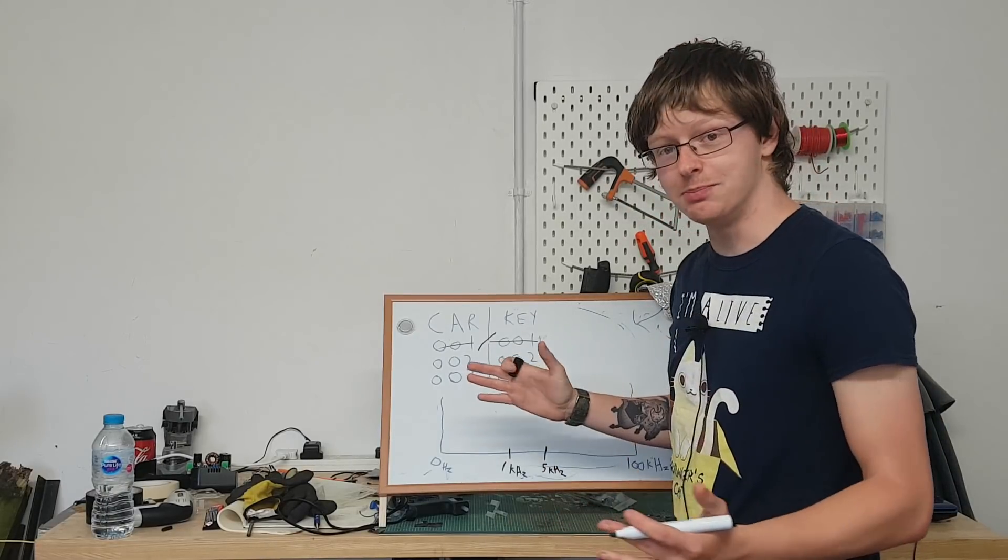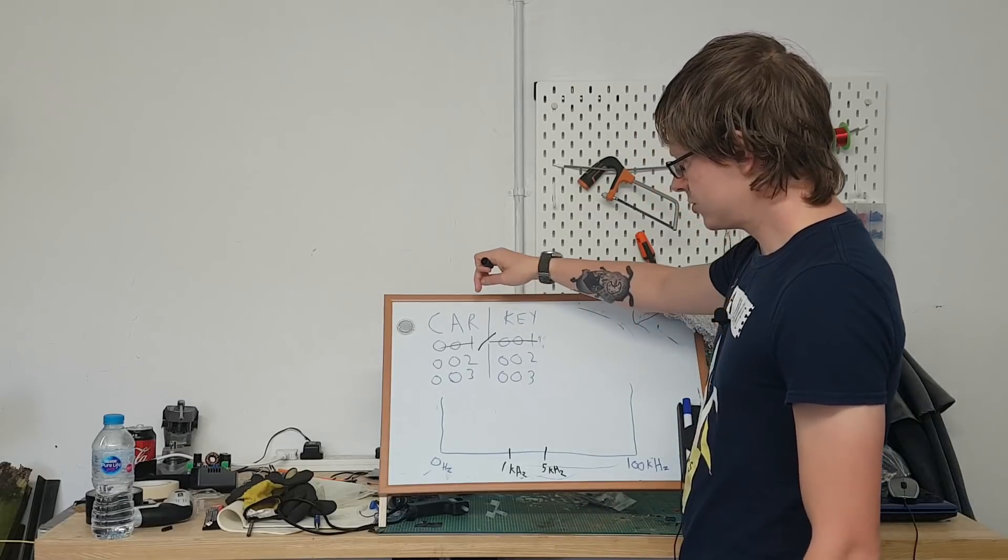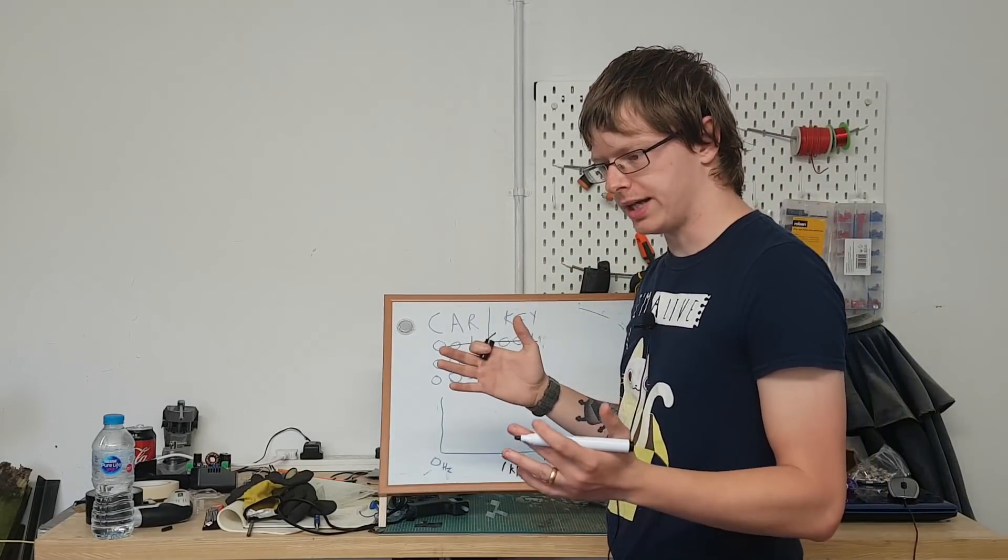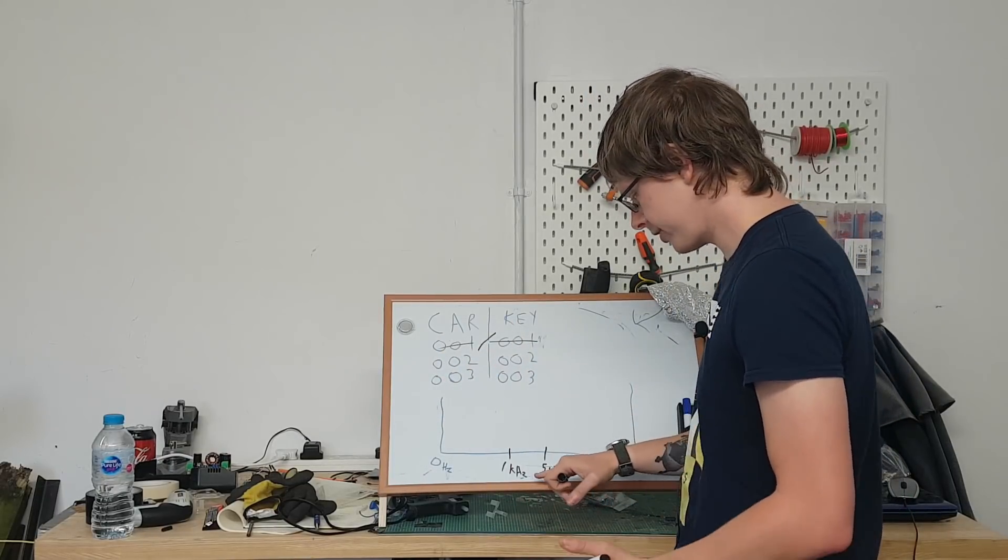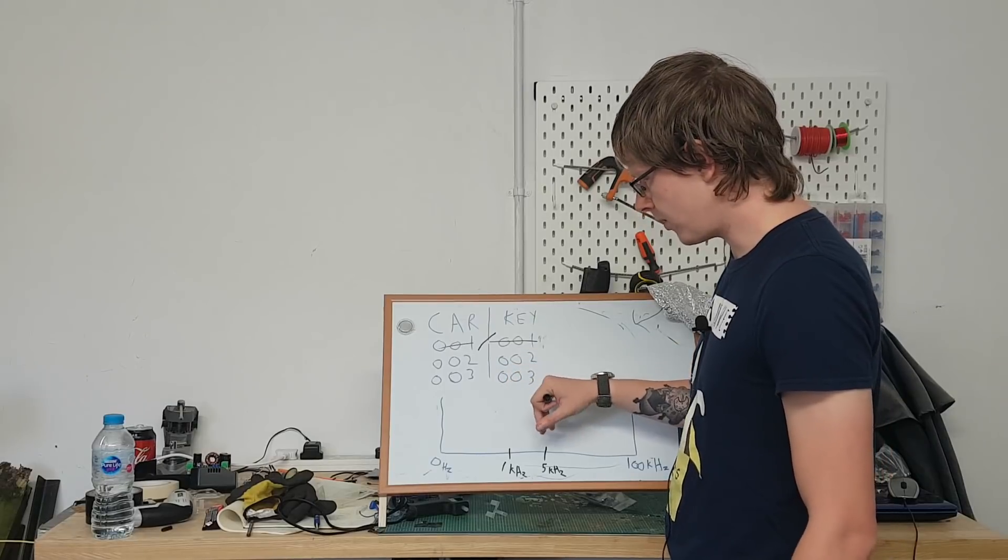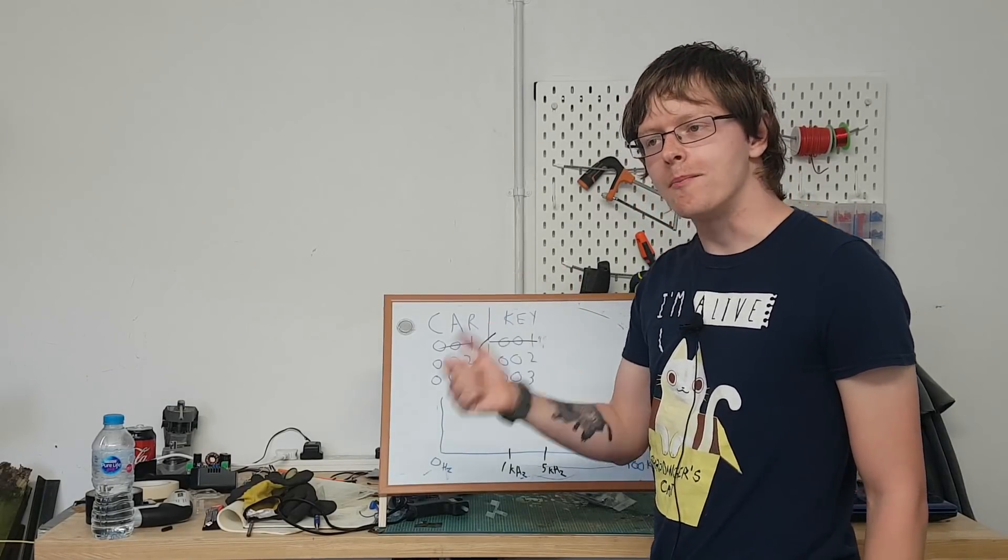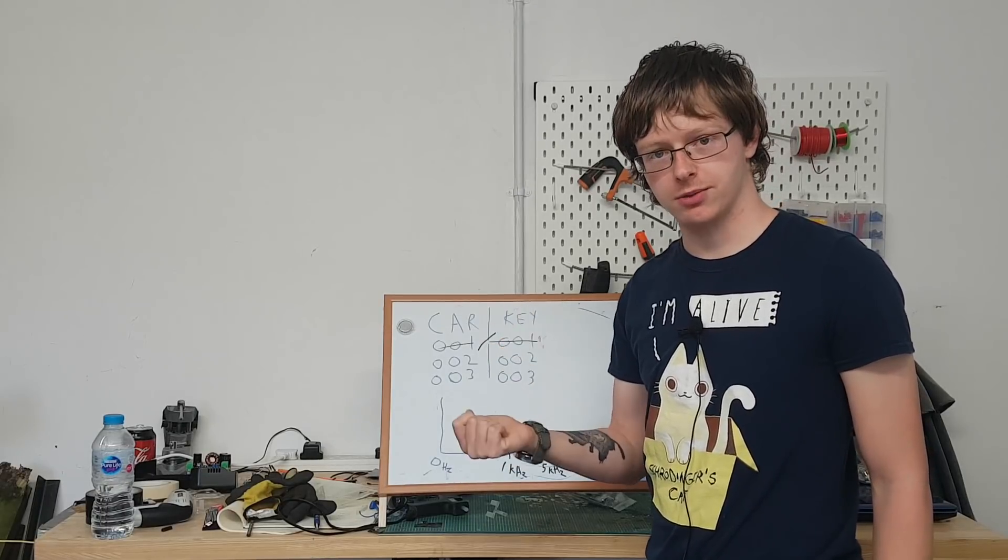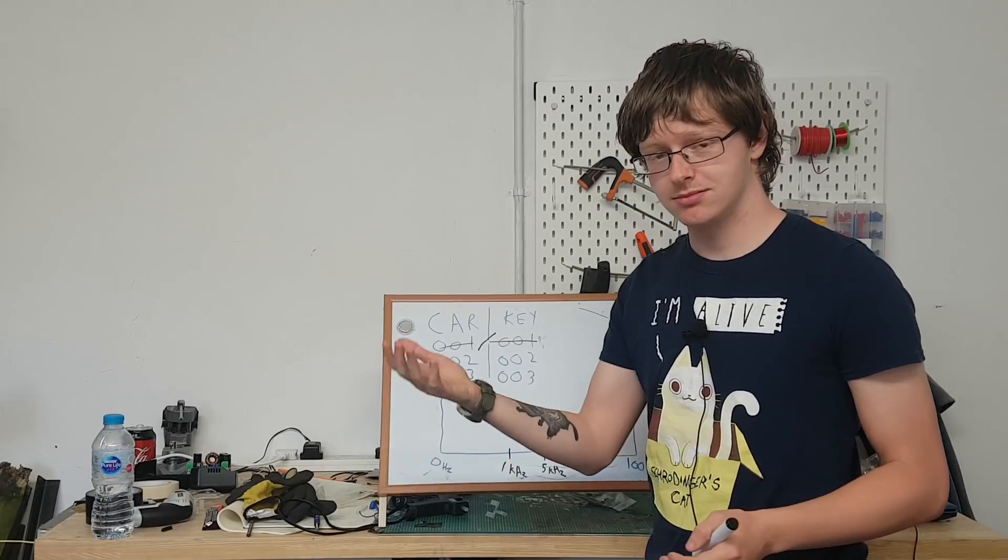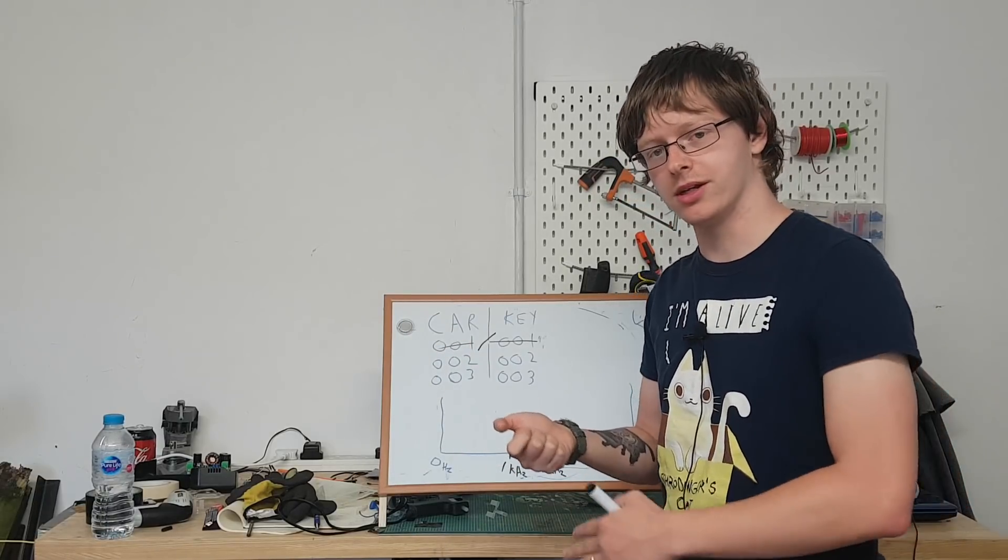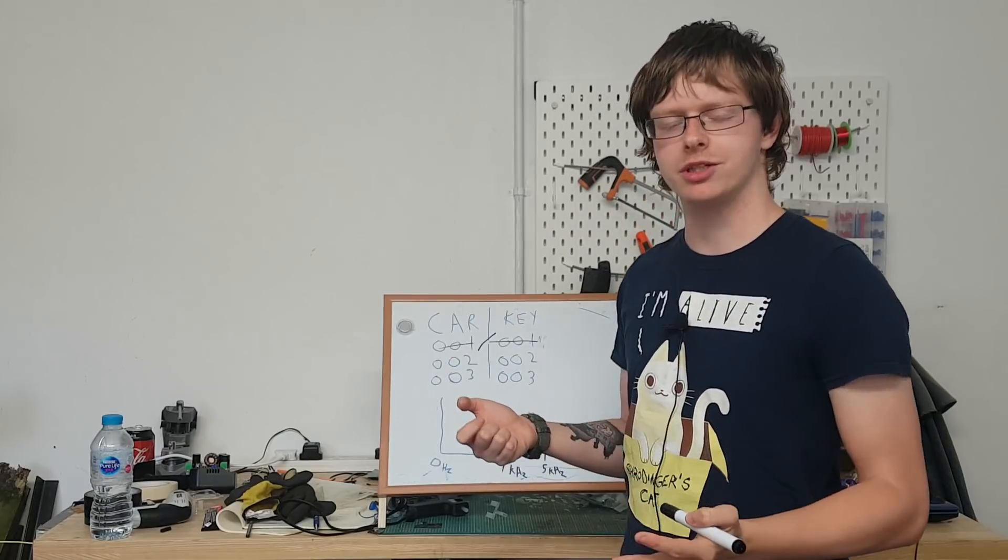Now the reason that a car has to have quite a wide listen window, the reason it needs to be quite wide is because your car keys, your key fobs, might not transmit on the same frequency. Now they will transmit on the same frequency that whenever you get it and you press the button it transmits on a set frequency. It's going to transmit on that frequency for a foreseeable amount of time.